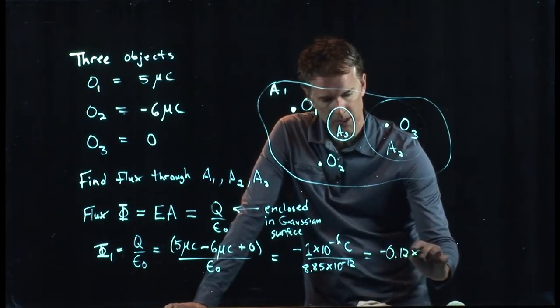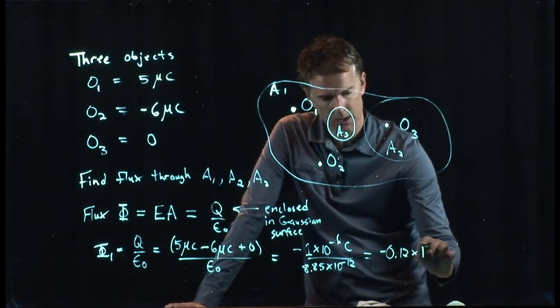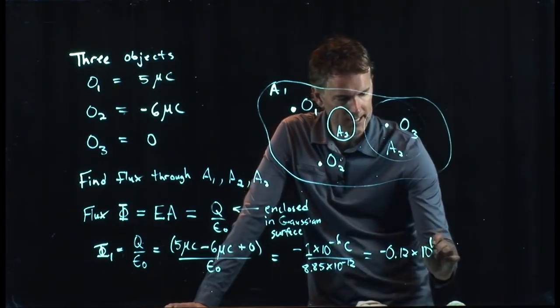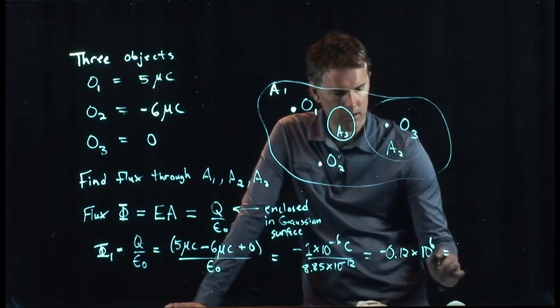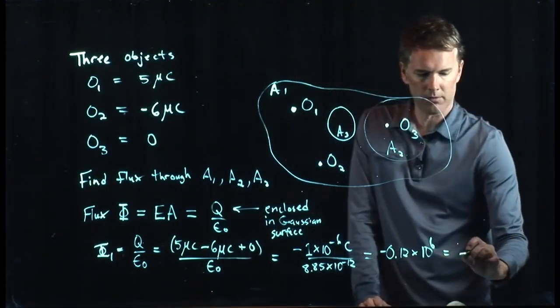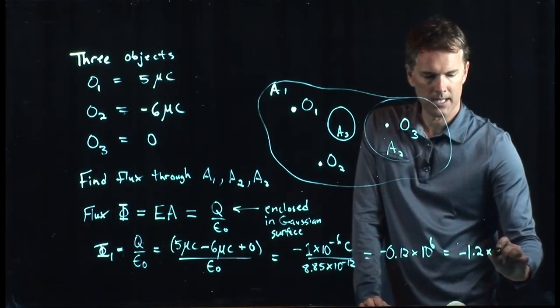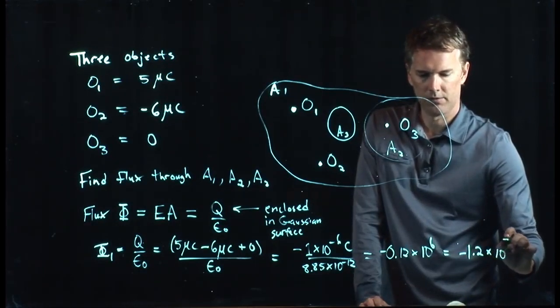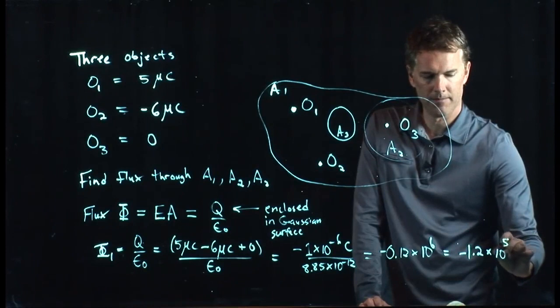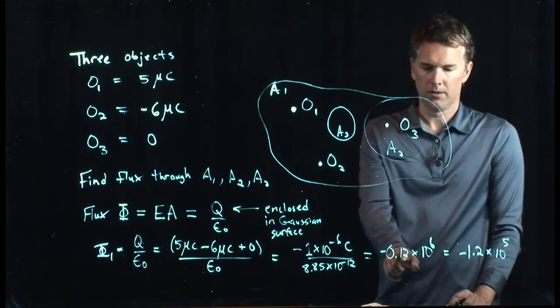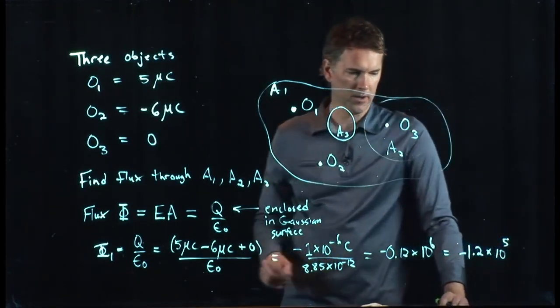And then this is going to be 10 to the minus 6. I have to add 12, so I get a 10 to the 6. So I'm going to say this is minus 1.2 times 10 to the 5, right? I moved it over 1, and so we need to drop 1 from there.